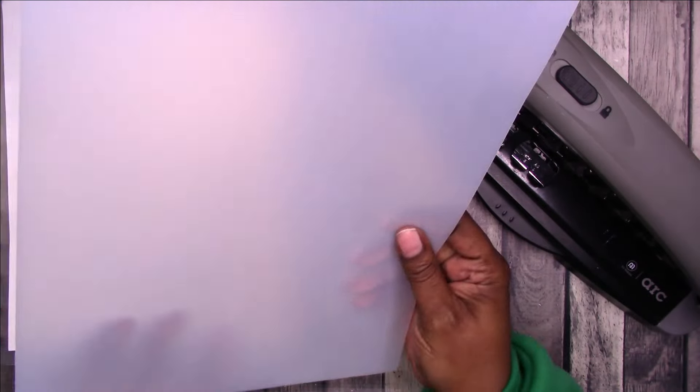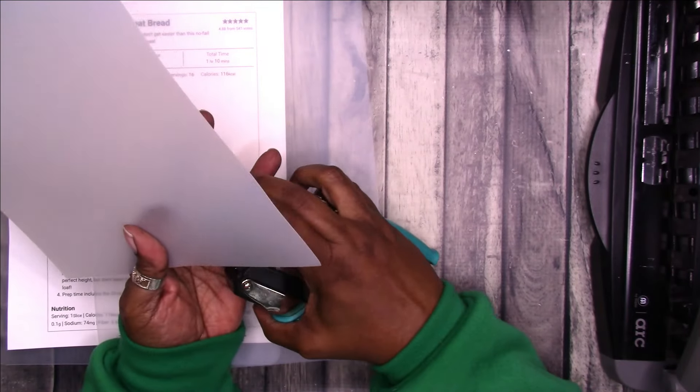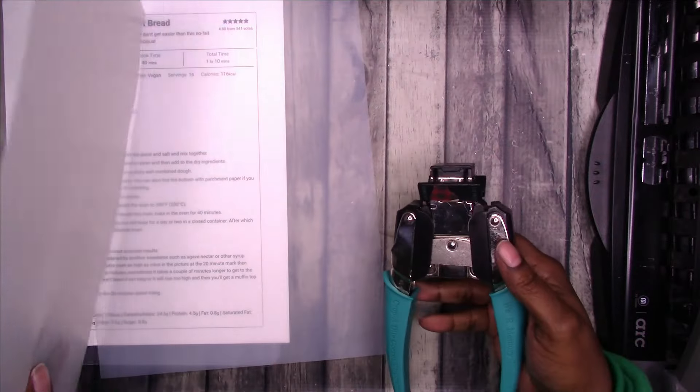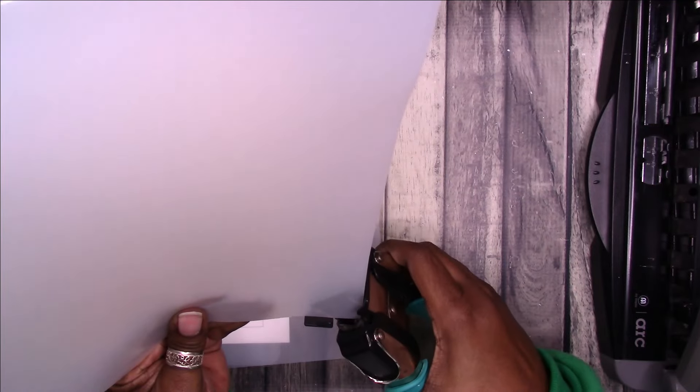So let's go ahead and round the corners. I'm using the We Are Memory Keepers corner rounder. I used half inch on the first one so I think I'm just going to use half inch on this one too.